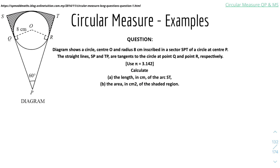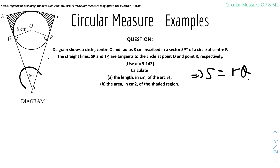Now for some examples. The diagram shows a circle with center O and radius 8 cm, inscribed in sector SPT of a circle at center P. The straight lines SP and TP are tangents to the circle at points Q and R respectively. Assuming π = 3.142, calculate the arc length ST. The arc formula is s = rθ; we have θ, but we still need to find the radius of the larger circle.